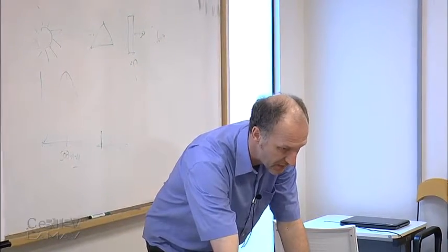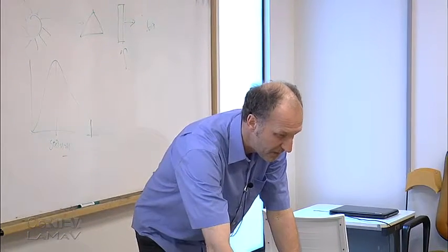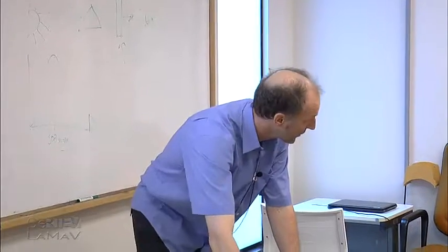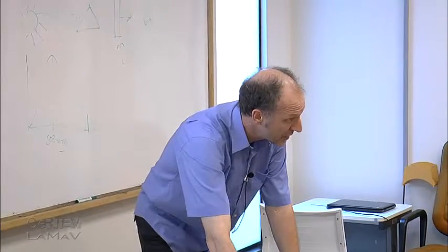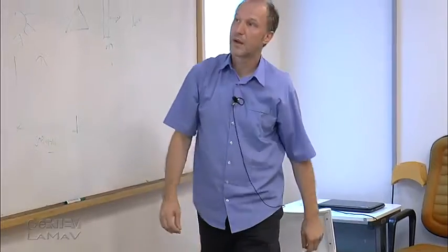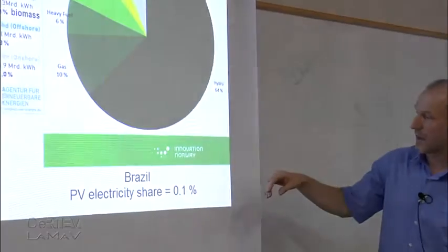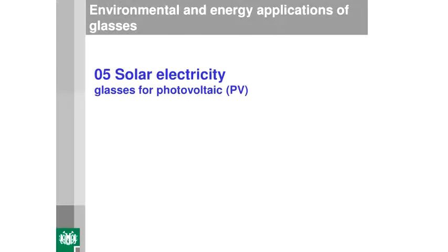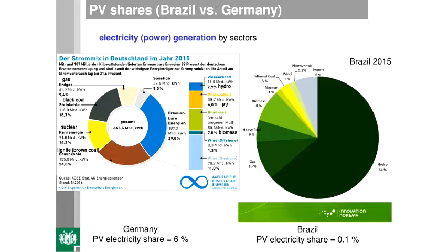Now to PV shares. In Germany, the total renewable share is around one-third, of which about 6% of electricity comes from photovoltaics — a significant amount for small Germany. In Brazil, the PV share is just 0.1%; it only started around 2013. Most of Brazil's electricity comes from hydropower, so there isn't a big PV market yet — but it may become important in the future.